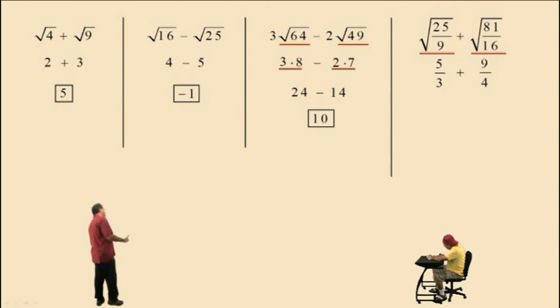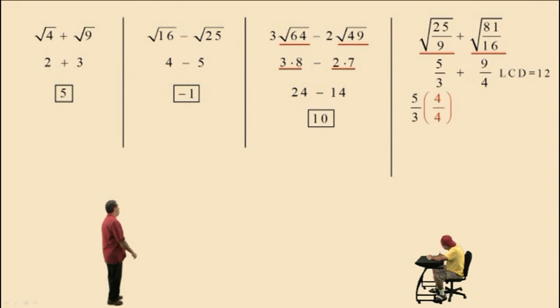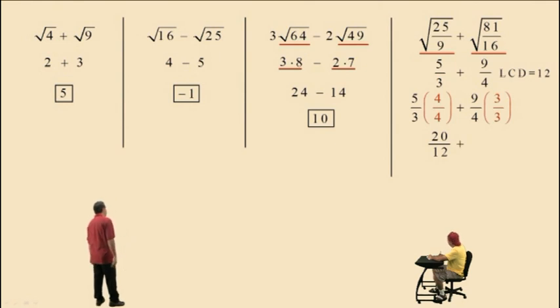Now we can perform our addition. But remember, when you add or subtract fractions, they must have the same denominator. Here our LCD is 12. So the 5 thirds, you have to multiply top and bottom by 4 over 4, and the 9 fourths by 3 over 3. Performing the multiplication, we get 20 twelfths plus 27 twelfths, which gives us a final answer of 47 twelfths.